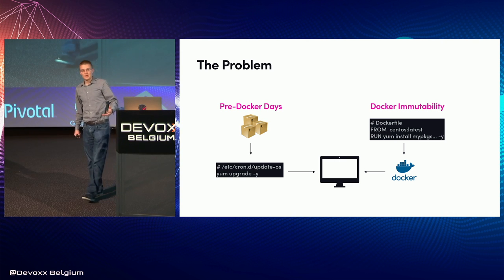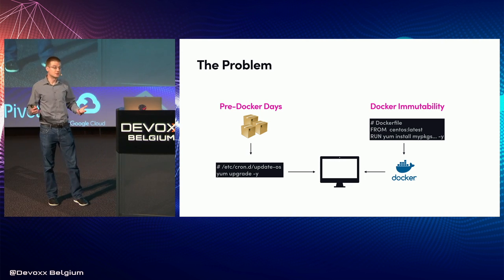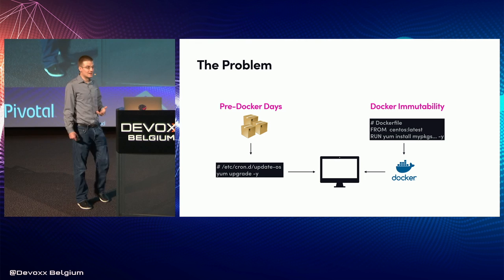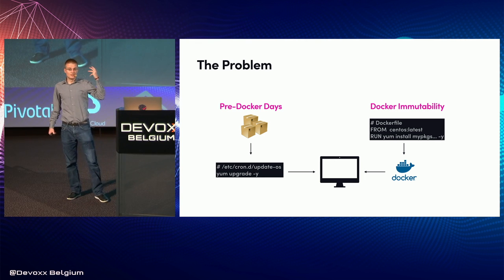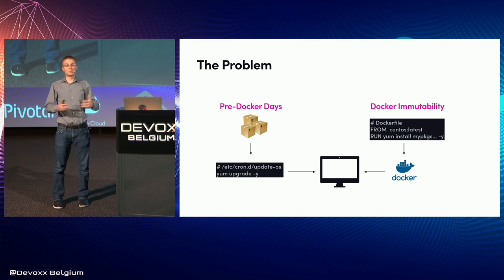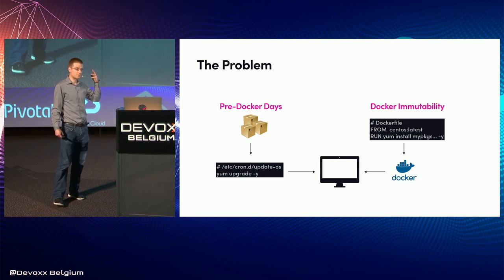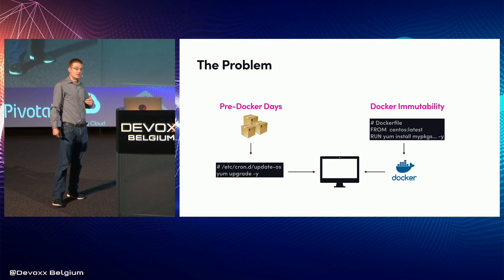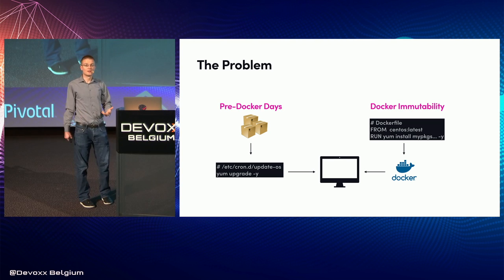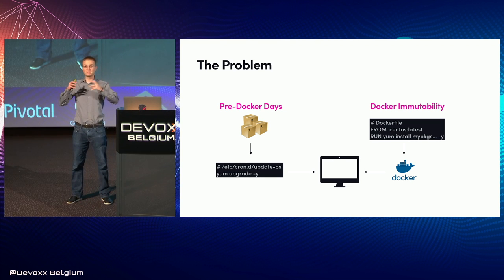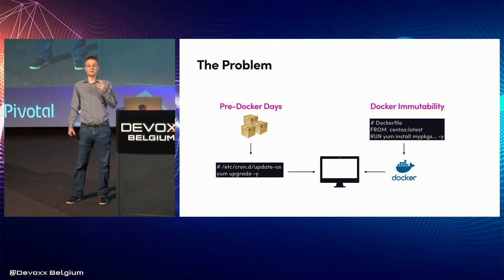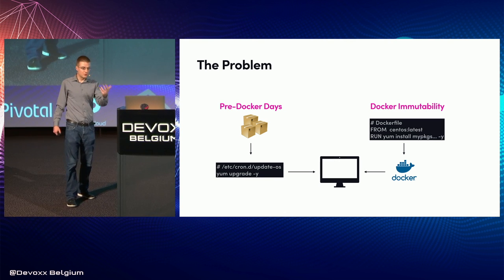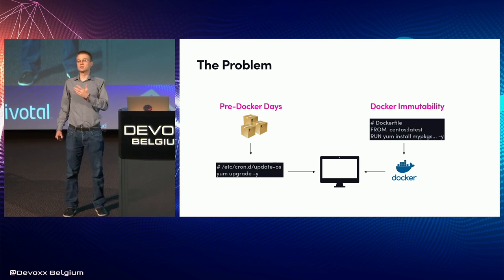In the pre-Docker days we essentially ran our infrastructure by having cron jobs that would do OS updates. What was nice about that was as soon as a distribution would publish a package, it would get pulled down by your cron job at whatever cadence you choose. With Docker we went from that to these immutable objects that you have to build in advance and then ship. So if you don't do that, you don't get those packages that the distributions publish.